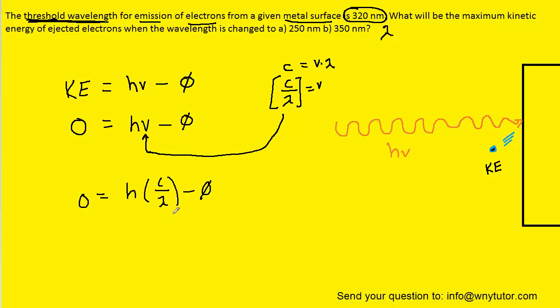What we can do next is actually solve this equation for the work function, and that way we're going to be able to calculate the work function. That's relatively easy. We can just add the work function over to the other side. We can see that it equals h, which is Planck's constant, multiplied by the speed of light divided by the threshold wavelength.